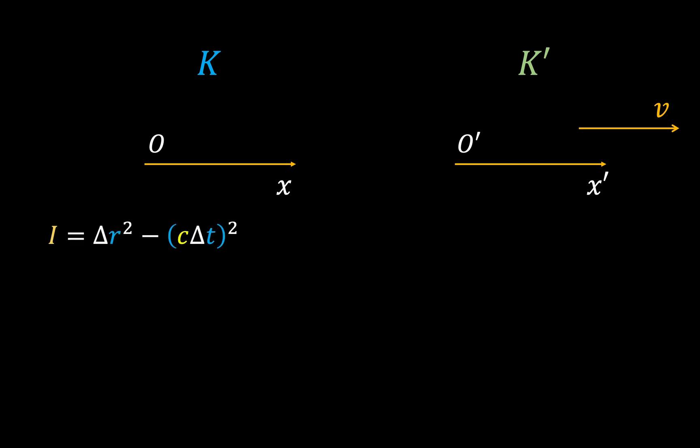Now the more general expression for the spacetime interval is delta r squared minus c delta t all squared, where delta r is just the spatial distance between two events. So in 1D this is equal to delta x squared minus c delta t all squared.